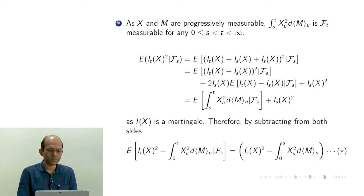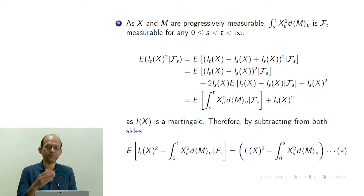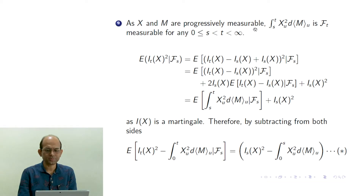Next, we consider X and M, where X is from L star M and M is a continuous square integrable martingale. If one has an adapted process which is right continuous or left continuous, then that adapted process becomes also progressively measurable. X is anyway progressively measurable. X and M both are progressively measurable, and therefore if we consider the quadratic variation of M, that would also be progressively measurable.